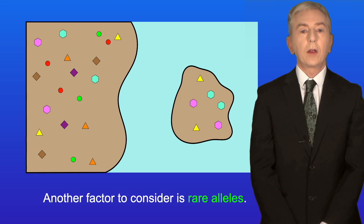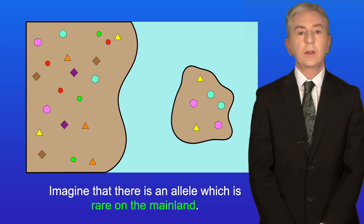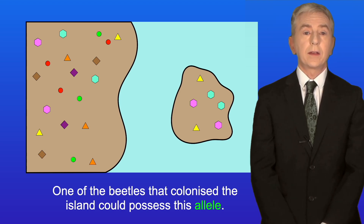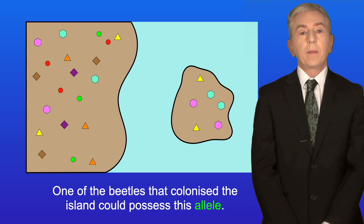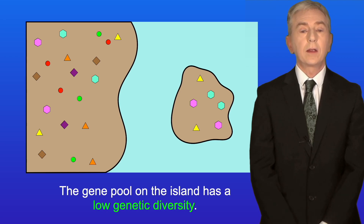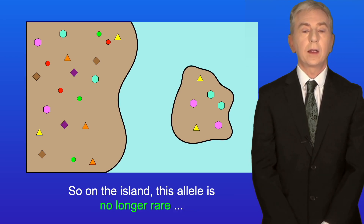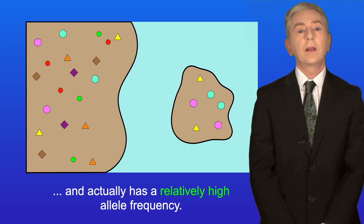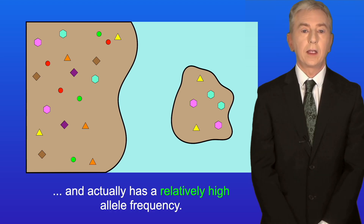Another factor to consider is rare alleles. Imagine there is an allele which is rare on the mainland, but one of the beetles that colonized the island possesses it. Because the island gene pool has low genetic diversity, this allele is no longer rare on the island and actually has a relatively high allele frequency.